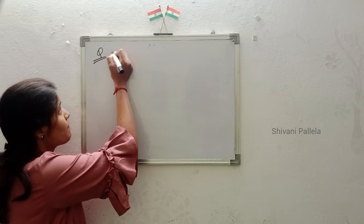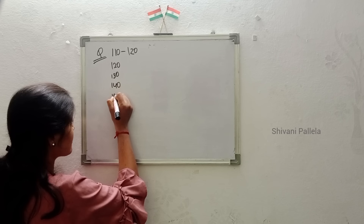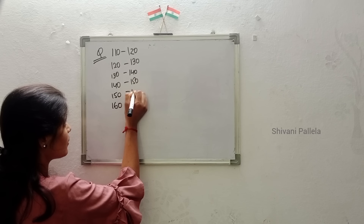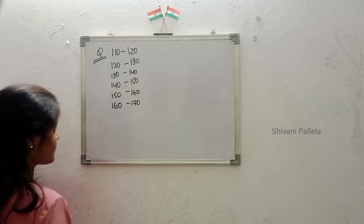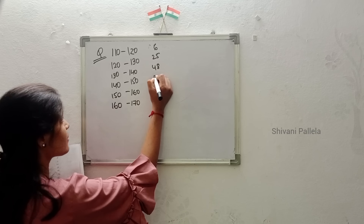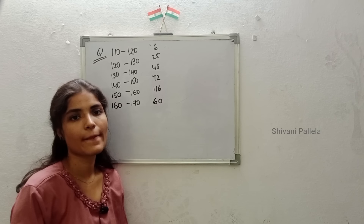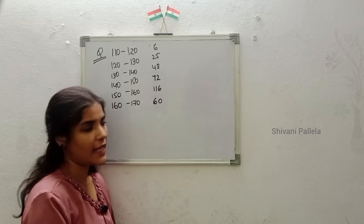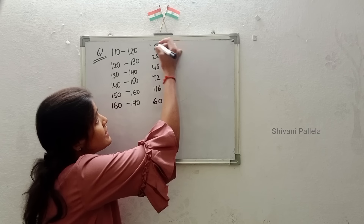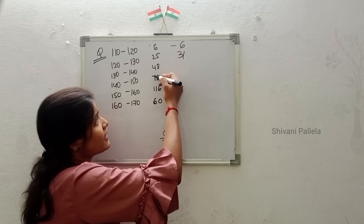The question gives class intervals: 110–120, 120–130, 130–140, 140–150, 150–160, 160–170. The frequencies f are: 6, 25, 48, 72, 116, and 60. Now we need to calculate cf — cumulative frequency. The first number is 6. Then 6 plus 25 equals 31, then 31 plus 48 — calculating next.